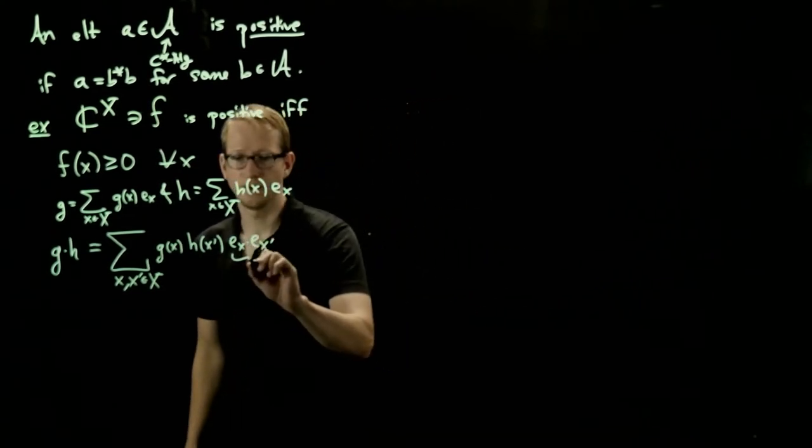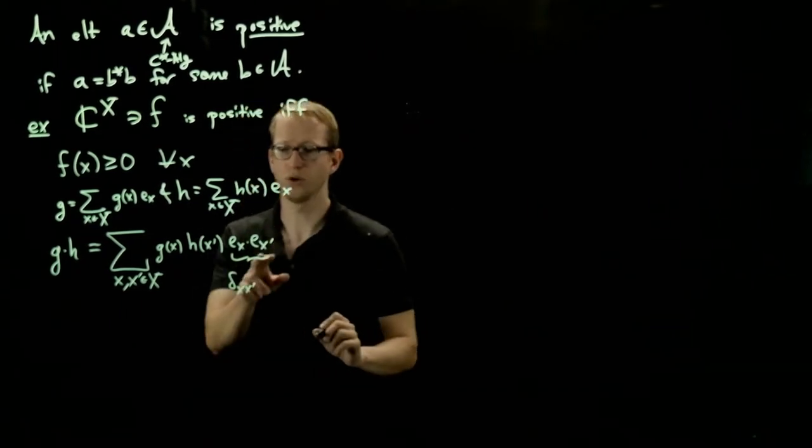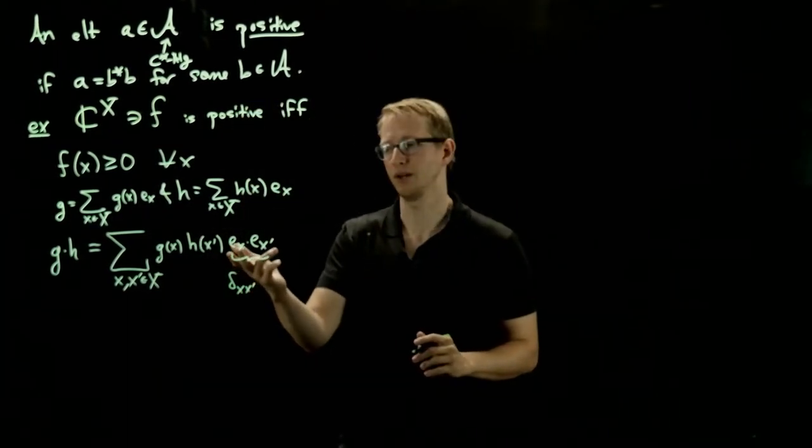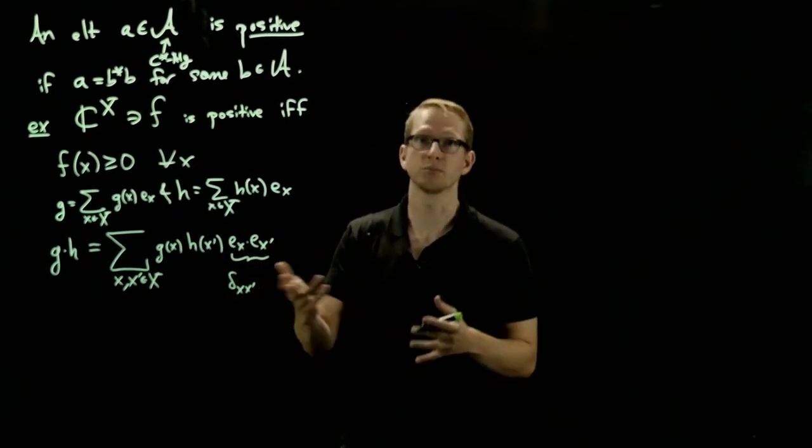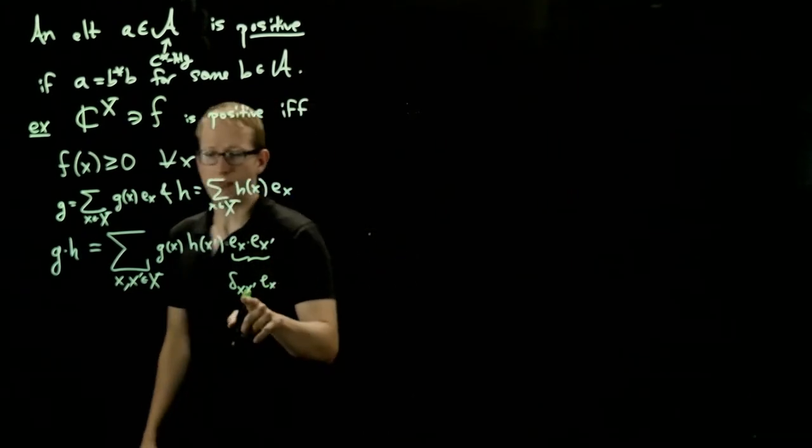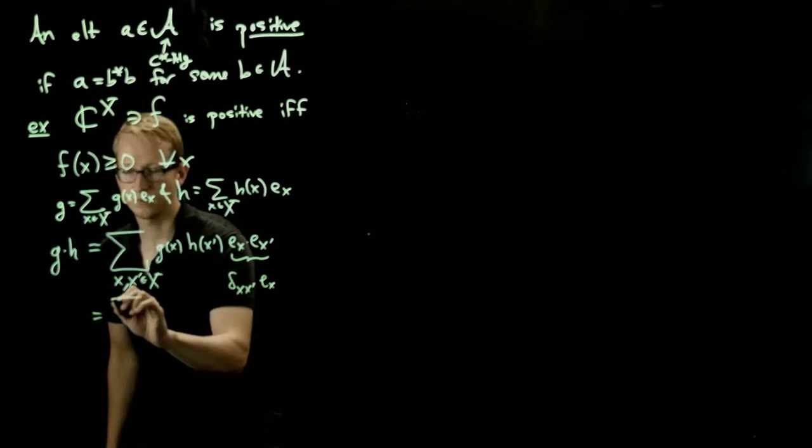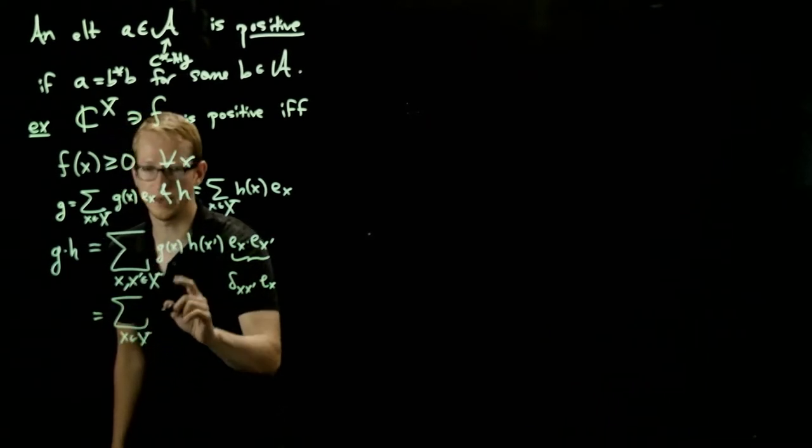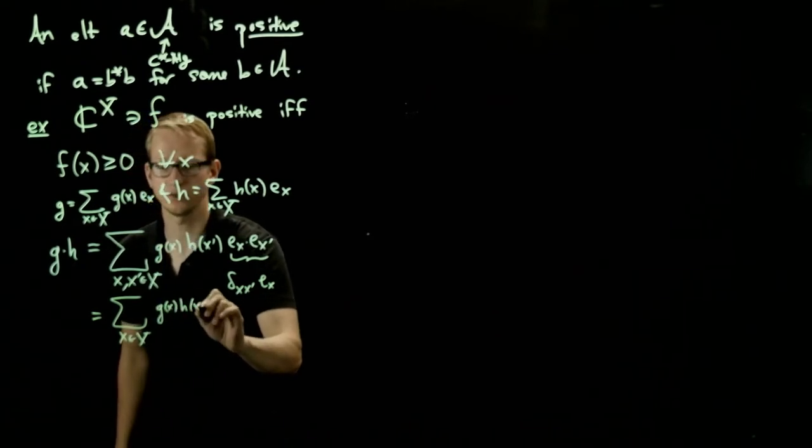So this gives us the Kronecker delta, delta_{X,X'}, multiplied by either of these. It doesn't matter whether we use E_X or E_X prime, because if X equals X prime, we get the same result. Now because we have a double sum with a Kronecker delta here, this becomes a single sum over elements in X, and we end up just multiplying the values of these two functions.